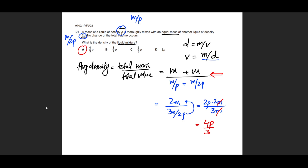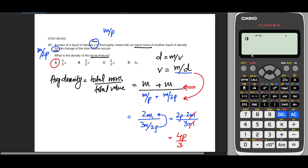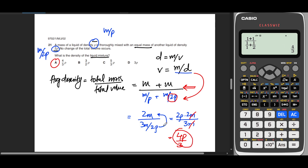To avoid algebra errors, use the calculator fraction function: type 1+1 in the numerator, then for the denominator enter fraction 1/1 plus fraction 1/2. Press equals and you get 4/3, confirming the answer. This technique bypasses LCM calculations and reduces mistakes.